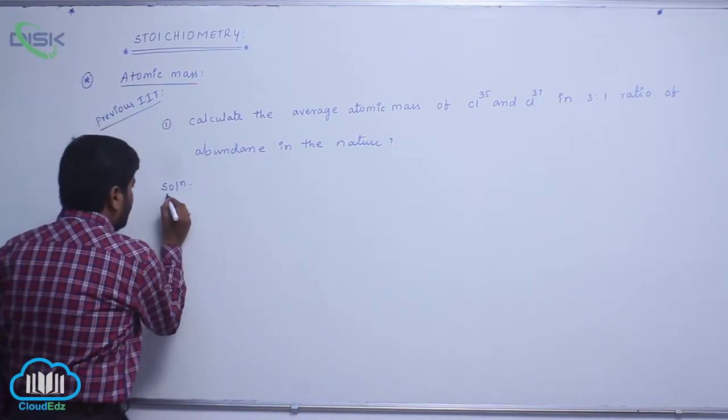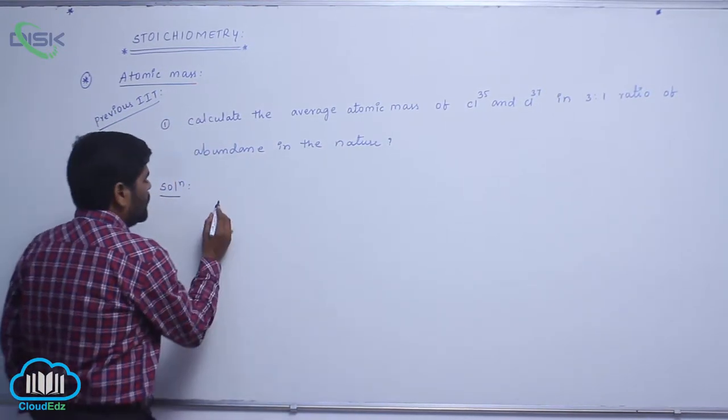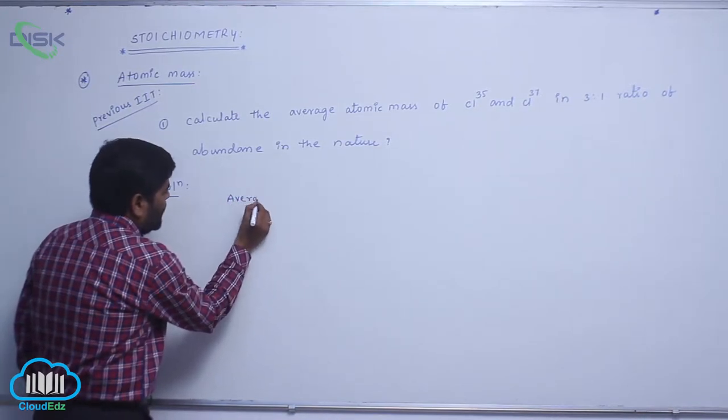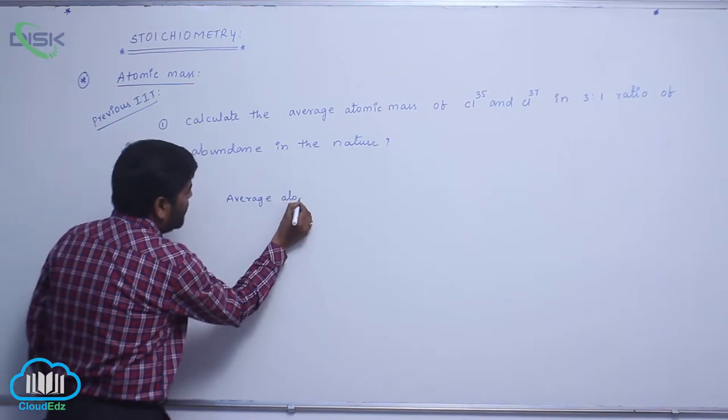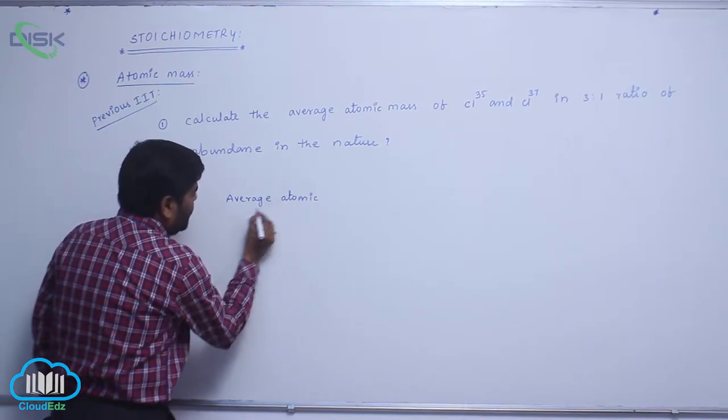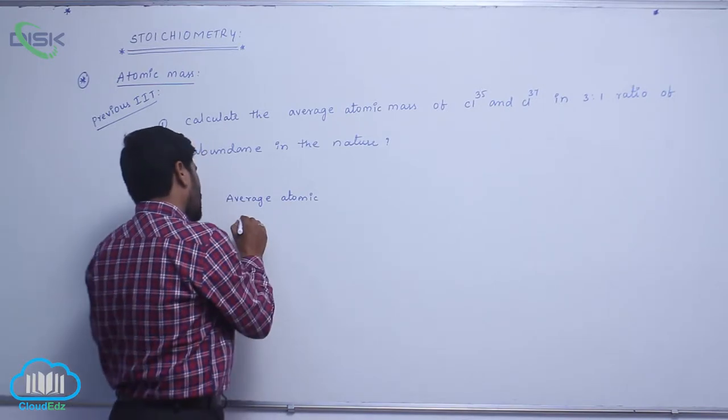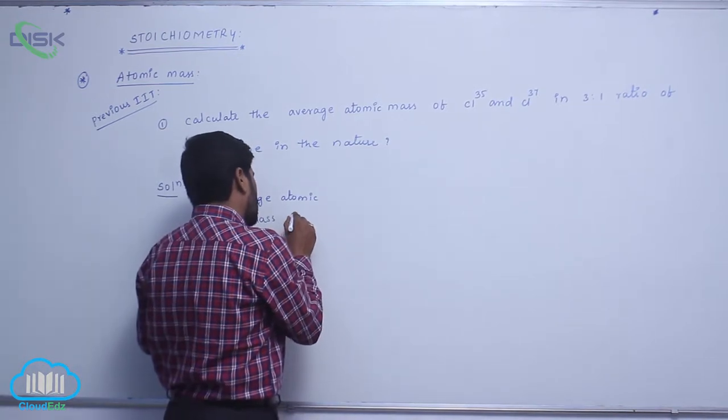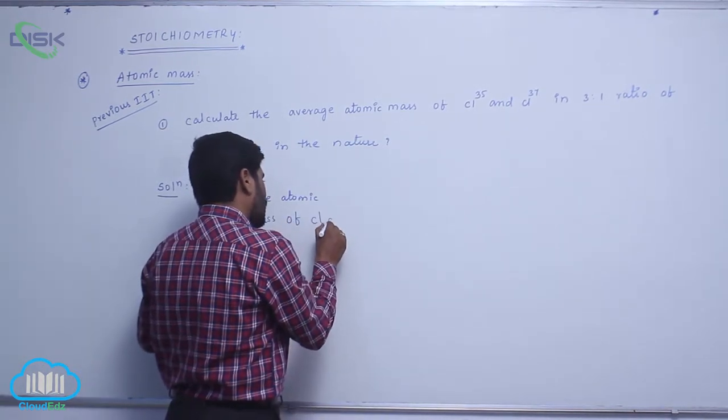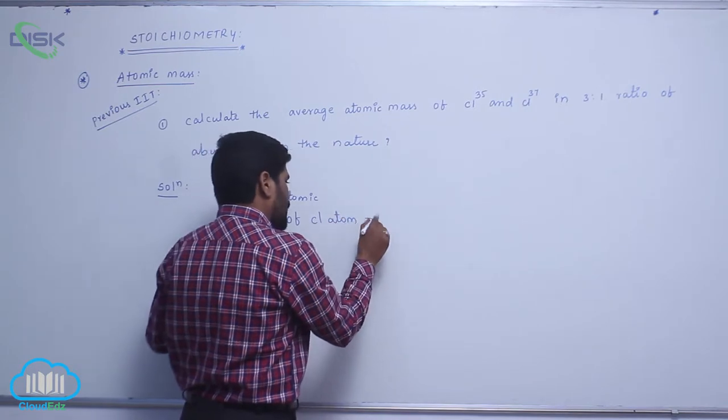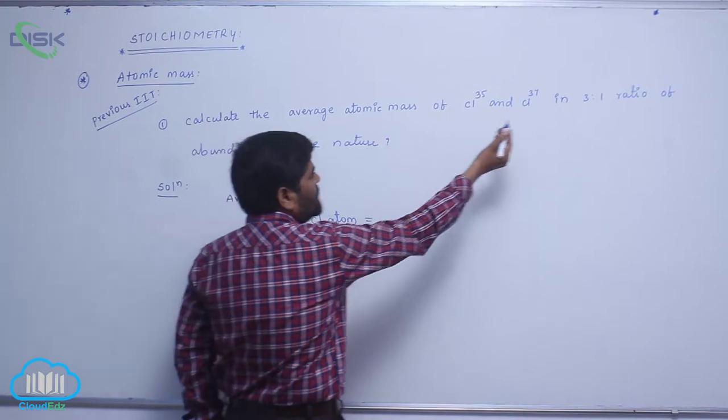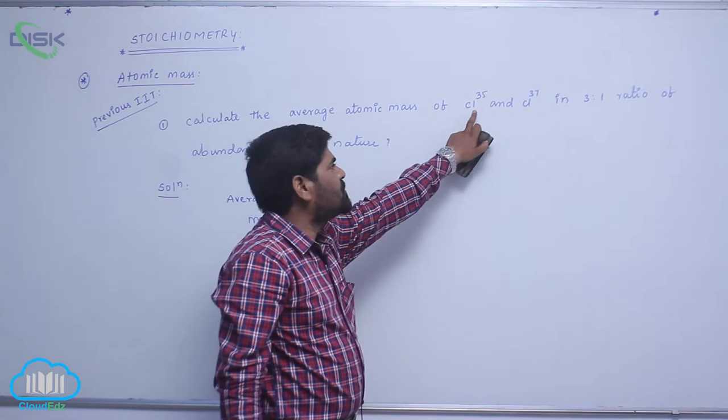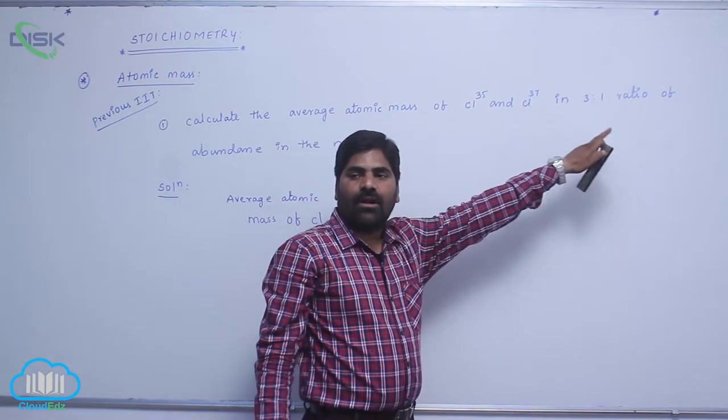The solution: average atomic mass of chlorine atom. The 3 to 1 ratio means this chlorine abundance is 75 percent and this chlorine abundance is 25 percent.